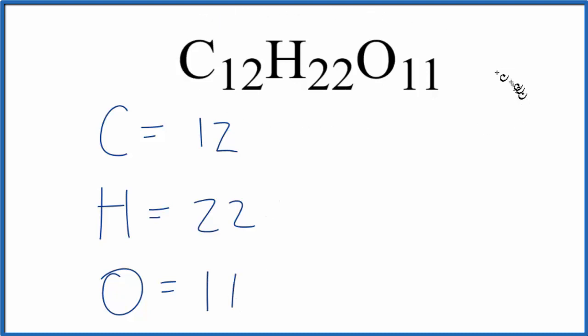So if we want to know the total number of atoms, we need to add these up. So 11 plus 22, that's 33 plus 12. That gives us 45 total atoms in C12H22O11.